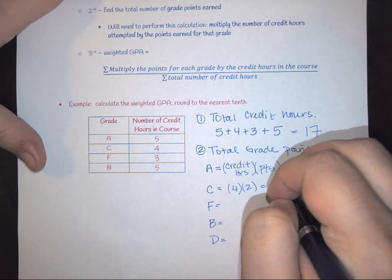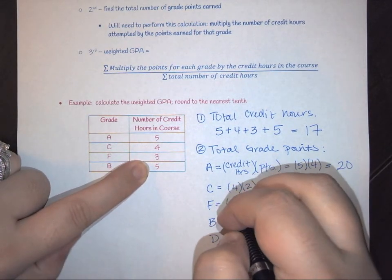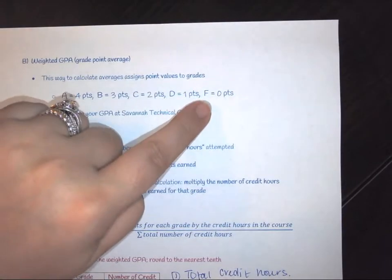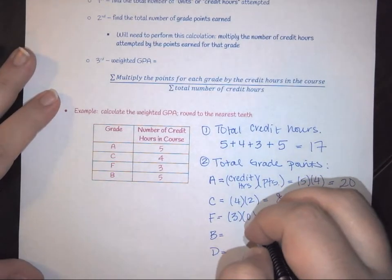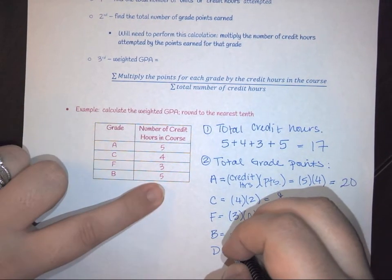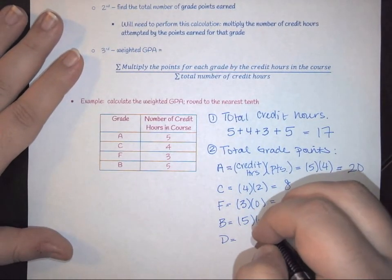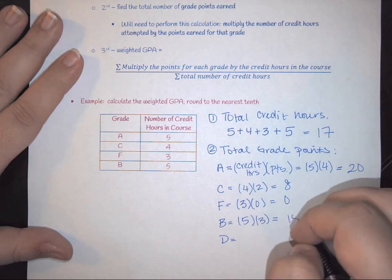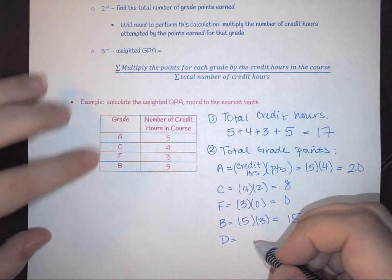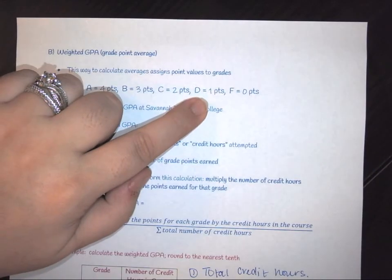For my F, I attempted three credit hours. The F earns you nothing, so times 0 gives me 0. And then my B, I attempted five credit hours. B's earn you three points, so this is times 3, which gives you 15. And D's are zero credit hours. Obviously D's earn you one point, so times 1, but zero times anything is zero.